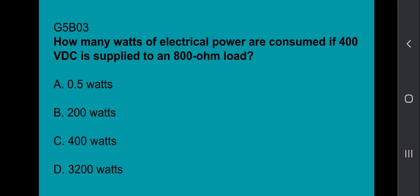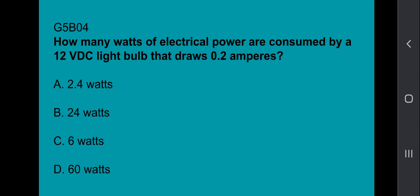G5B03, how many watts of electrical power are consumed if 400 VDC is supplied to an 800 ohm load? It's going to be 200 watts. G5B04, how many watts of electrical power are consumed by a 12 VDC light bulb that draws 0.2 amperes? That's 2.4 watts.